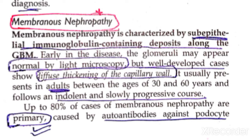When we look at the light microscope in the early stages, the glomerulus looks normal — like membranous. But a little later, we observe thickening of the capillary wall. In minimal change disease and focal segmental glomerulosclerosis there is no thickening. So the hallmark of membranous nephropathy is the capillary wall thickening — you must remember the thickening.